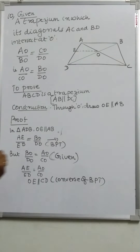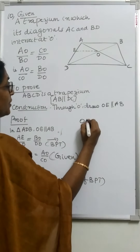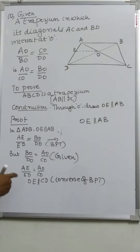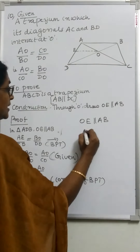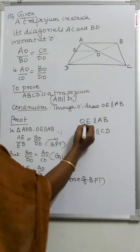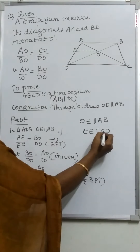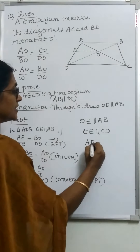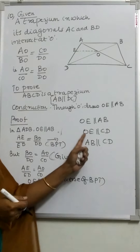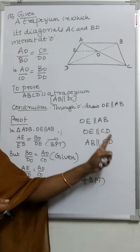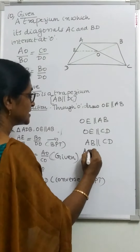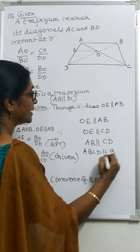OE is parallel to AB by construction, and we proved OE is parallel to CD. This means that AB is parallel to CD. Therefore, ABCD is a trapezium.